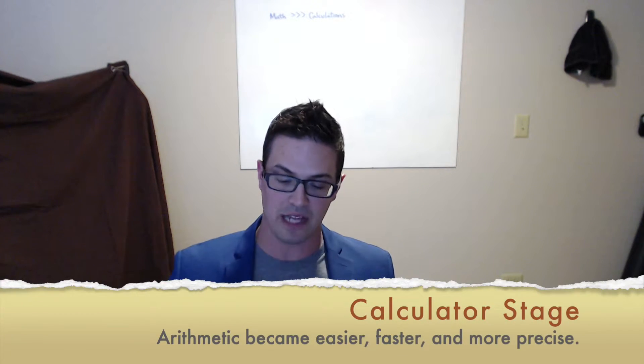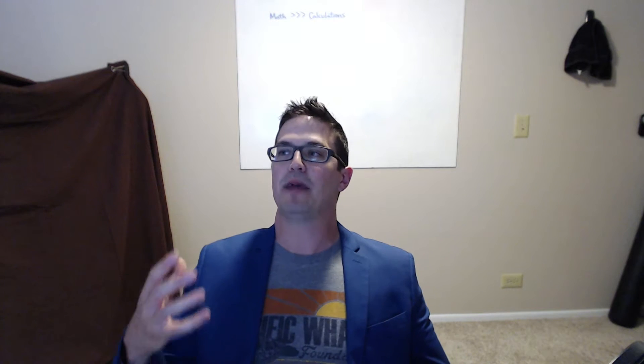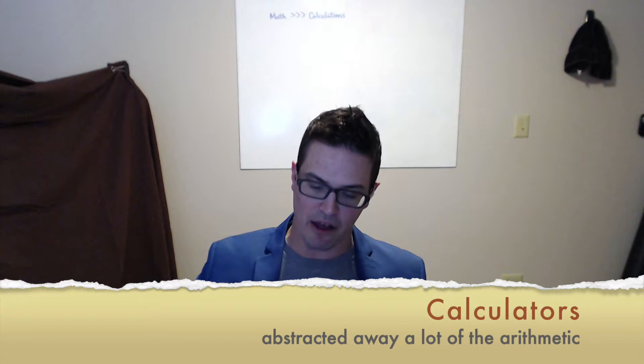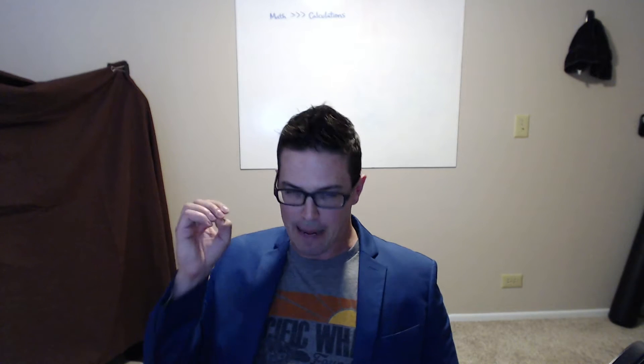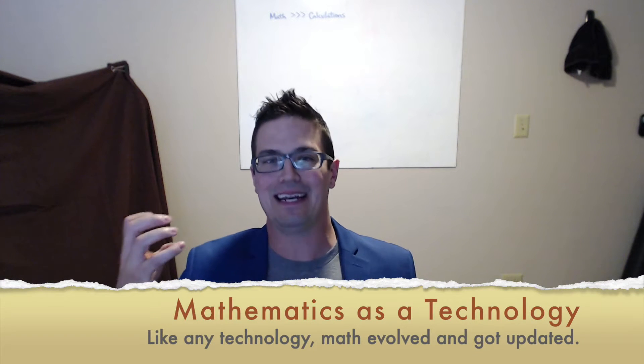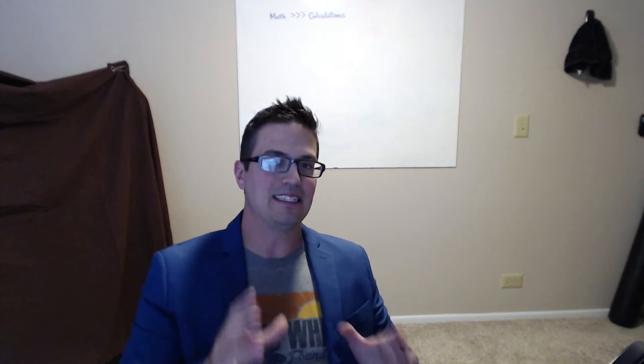Eventually calculators came around, replacing those tables, and now you can do quick arithmetic. The arithmetic that people did before was taking such a long time that they couldn't apply it to as many ideas. With calculators, things could be rapidly solved. Calculators abstracted away a lot of the arithmetic — you didn't have to round as much, and you could get more precise values. Now, some people when calculators first came around were very nervous and apprehensive. They thought that because students weren't doing arithmetic in their heads, their math ability was going to suffer. But if you think about math as a technology itself — as a tool — math as a technology actually changed and shifted.